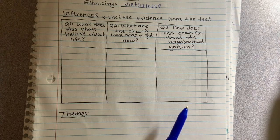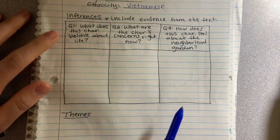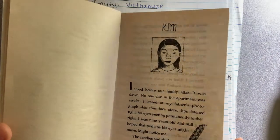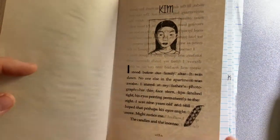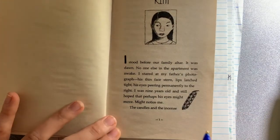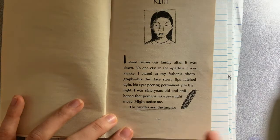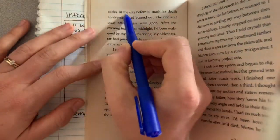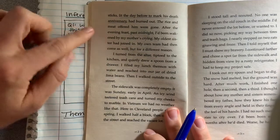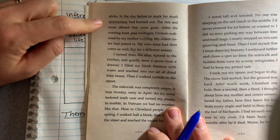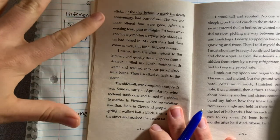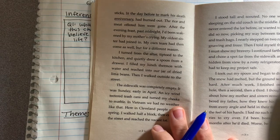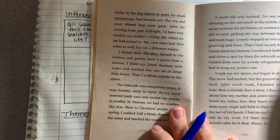We're going to answer these three questions together today. So question 1: what does this character believe about life? Based on the text and what we've read about Kim, and based on our own life experience, we are going to fill in a couple of ideas. One thing that stood out to me as I was reading is that there were candles and incense happening in the book. They were lit the day before to mark his death anniversary. That is not something my family does — in my background, I do not mark the death anniversary of my relatives or ancestors. So I thought that was interesting — that's part of Kim's life experience based on the text.